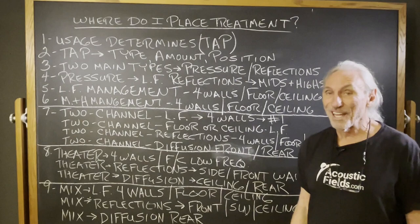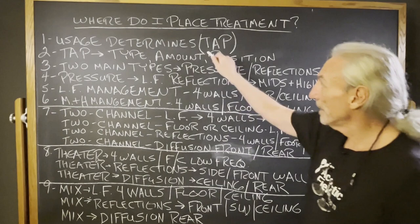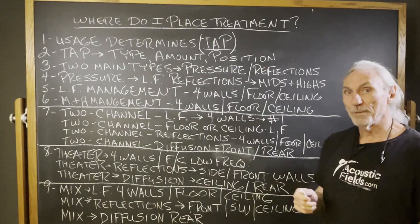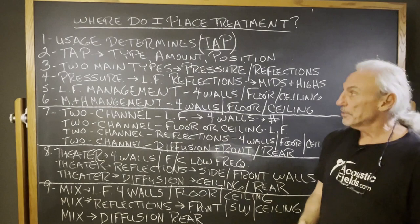What you're going to do in the room really is the guidelines — the room dimensions and all that — for the amount of treatment you're going to put in the room. Remember our acronym TAP: type, amount, and position. What type of treatment are we going to use, how much are we going to use, and where are we going to put it? Those are the three questions we have to answer.